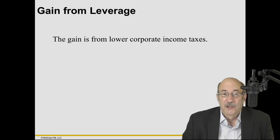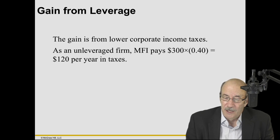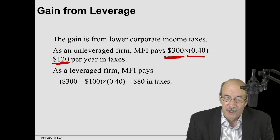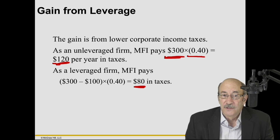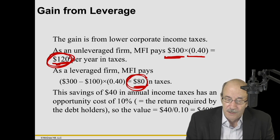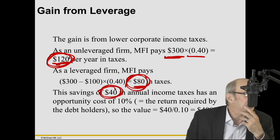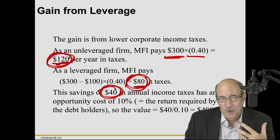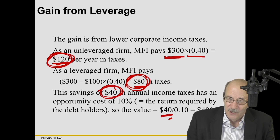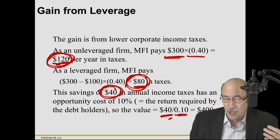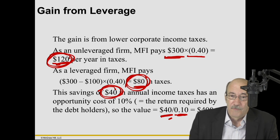The gain from leverage is lower corporate income taxes. The unlevered firm was paying 40% on $300 of income — $120 per year in taxes. As a levered firm, they only paid $80 per year in taxes, a savings of $40 per year. But since we save that every year and it's a perpetuity, the value of that tax shield — called the debt tax shield — is $40 divided by the cost of debt, which equals $400. It increases the value of the firm by $400. The gain from leverage going from the unlevered to levered firm: $1,200 plus the debt tax shield of $400 gives us the $1,600 value.